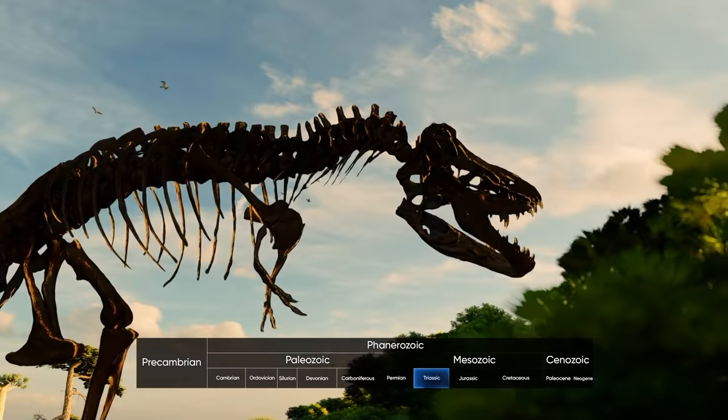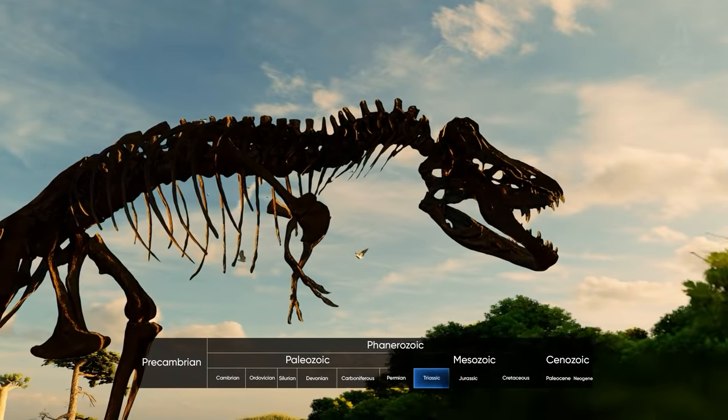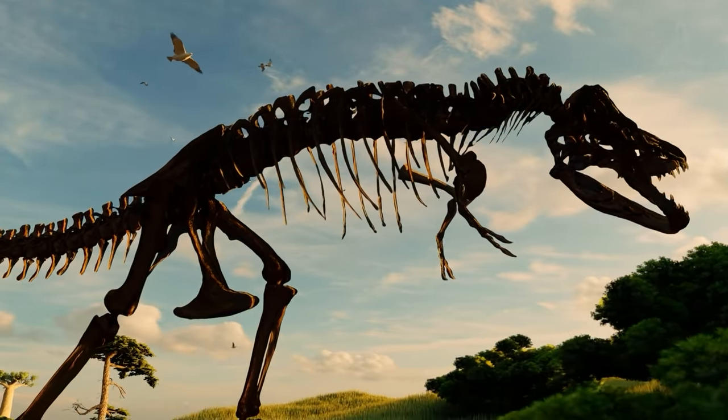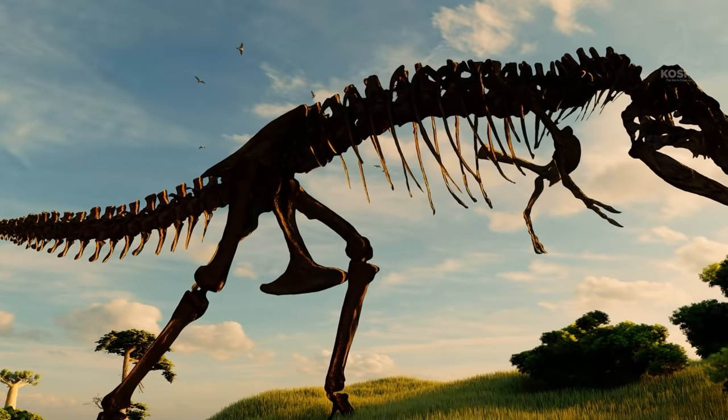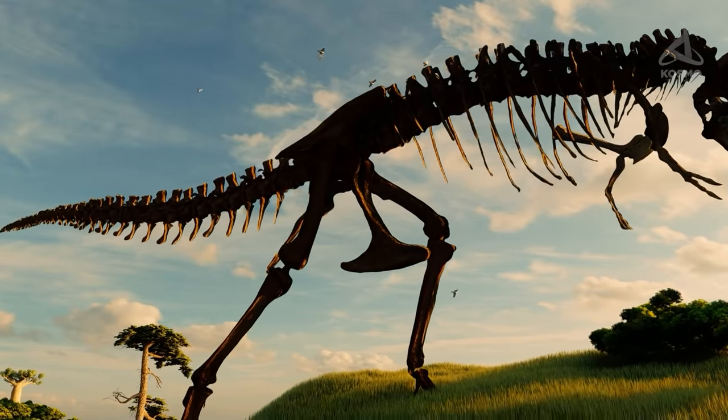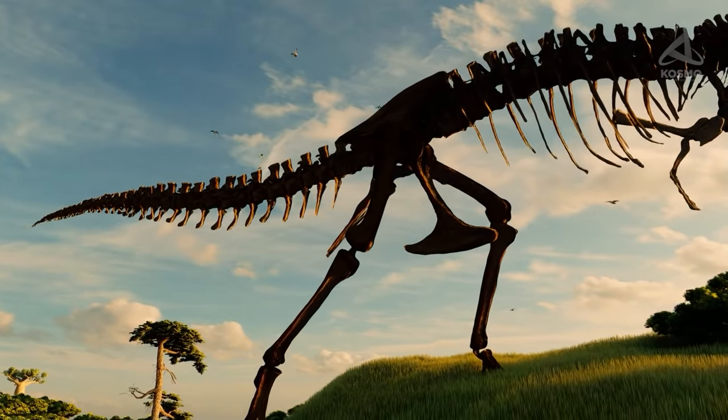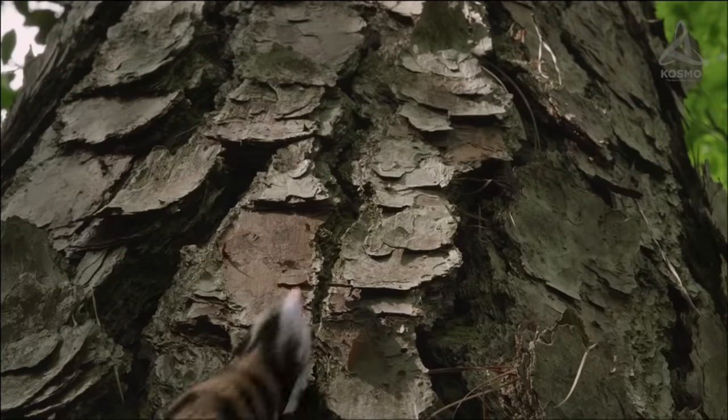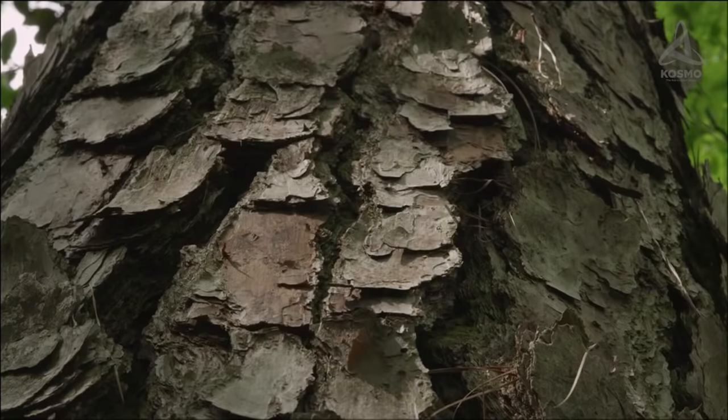In the Triassic period, which followed the Permian-Triassic extinction event, vertebrates vigorously evolved. This is when archosaurs emerged, the prehistoric saurians, crocodiles and dinosaurs were to evolve from. The Triassic period also produced first mammals, although they were not so widespread at that time.